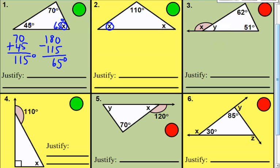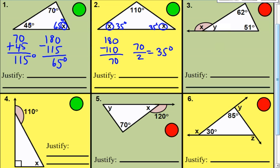Number two says that x and x are going to be equal to each other. We still do 180 minus 110 to get 70. Since there are two angles equal to the same measure, 70 divided by 2 would be 35 degrees — so 35 degrees is the measure of both of these angles.